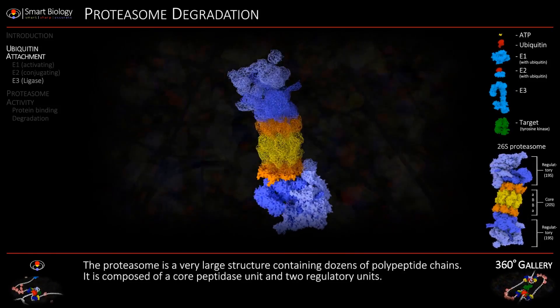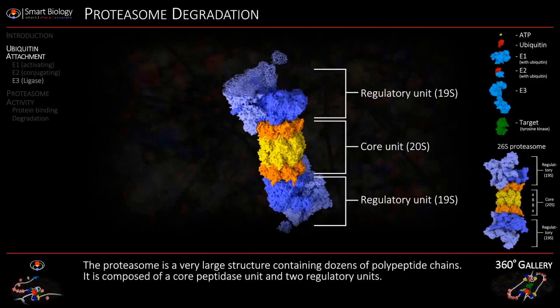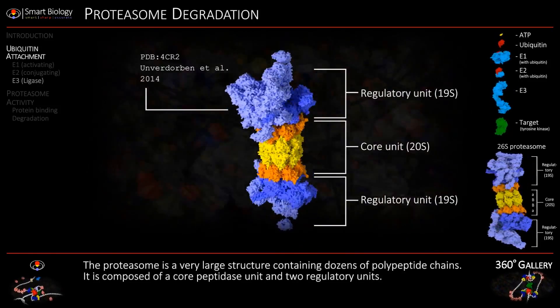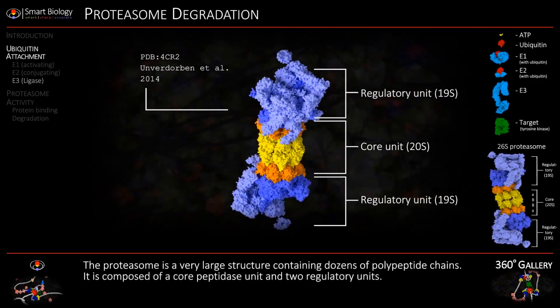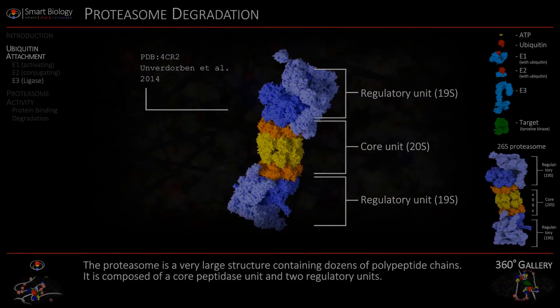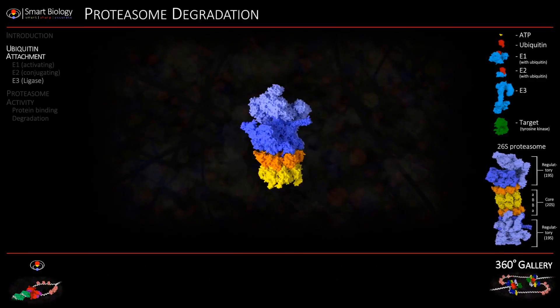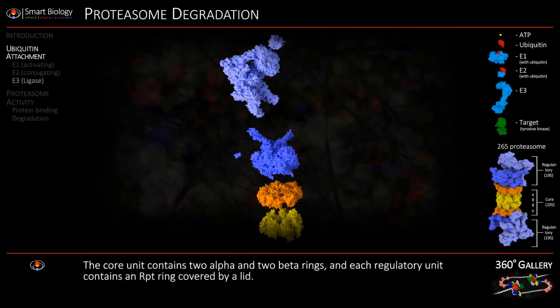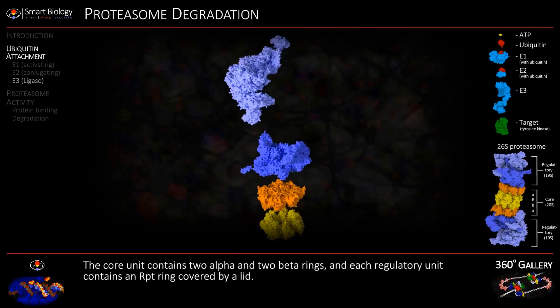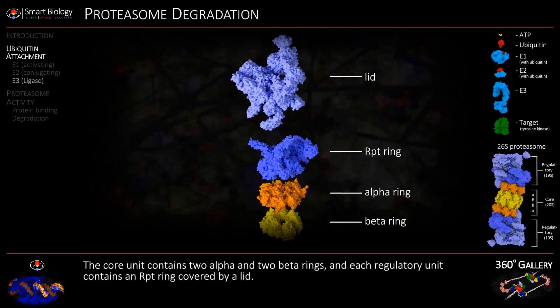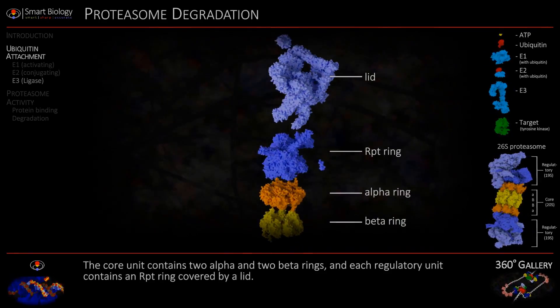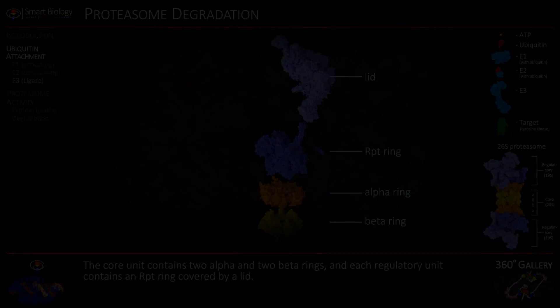The proteasome is a very large structure containing dozens of polypeptide chains. The core unit contains two alpha and two beta rings.